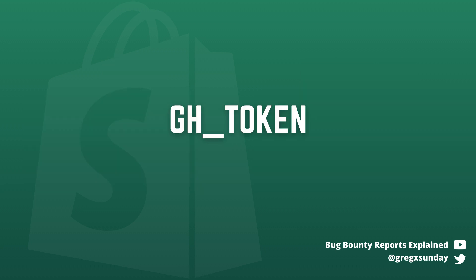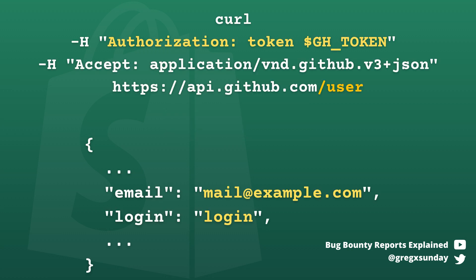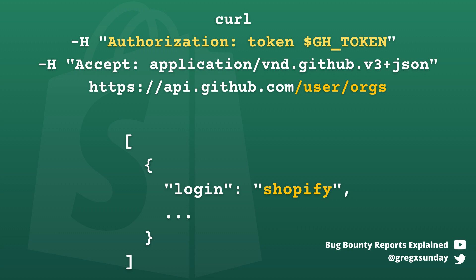Inside, among other credentials, the hunter found a GitHub token variable. As you may guess, it was a GitHub REST API token. Augusto confirmed it was valid by hitting the /user endpoint. At this point it only affected the developer who created the application, and nothing foreshadowed that it was related to Shopify in any way.